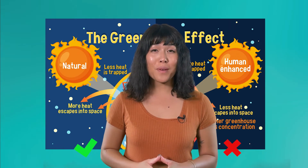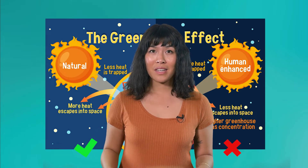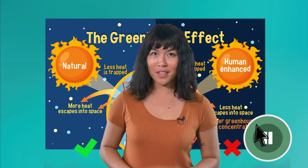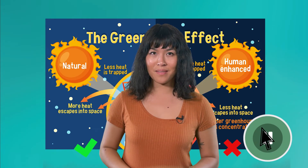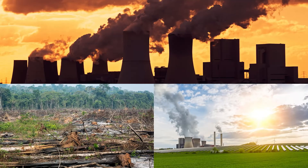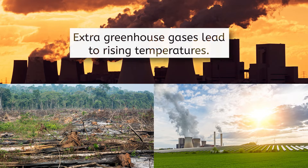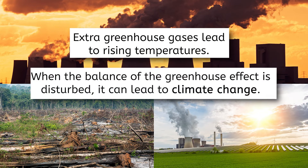How do you think humans enhance the greenhouse effect? Pause the video here to record your predictions. Burning fossil fuels, cutting down trees to build new structures, agriculture — all of these things can release extra greenhouse gases into the atmosphere. Because these greenhouse gases trap heat, extra gases leads to more heat trapping. This causes rising temperatures in the troposphere. When the balance of the greenhouse effect is disturbed, it can lead to climate change.